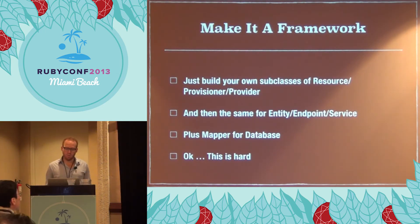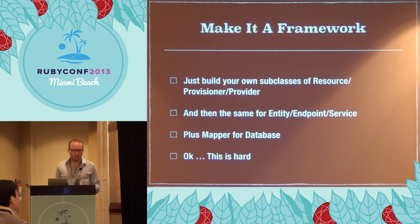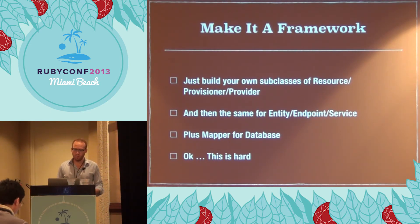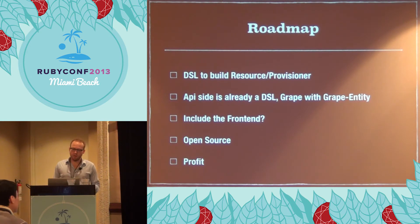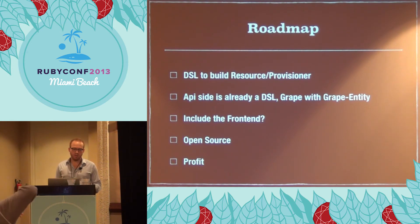How do I make this more of a framework — something reasonable for everybody? Right now it's kind of hard. You build your own subclass of resource, provisioner, and provider for your domain object. You also have to do your entity, endpoint, service, and write the mapper for the database — at least seven classes to create one operations resource. I've looked into making a DSL to build the resource and provisioner since they're very related, but the state machine is already a state machine DSL. It's hard to make frameworks on top of frameworks, and there's lots of class-level meta-programming.